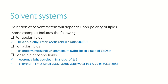The solvent system selection depends upon the polarity of the lipids. For neutral lipids and neutral fat, we use hexane, diethyl ether, and acetic acid in the ratio of 90:10:1. For polar lipids, we use chloroform, methanol, and ammonium hydroxide in the ratio of 65:25:4.